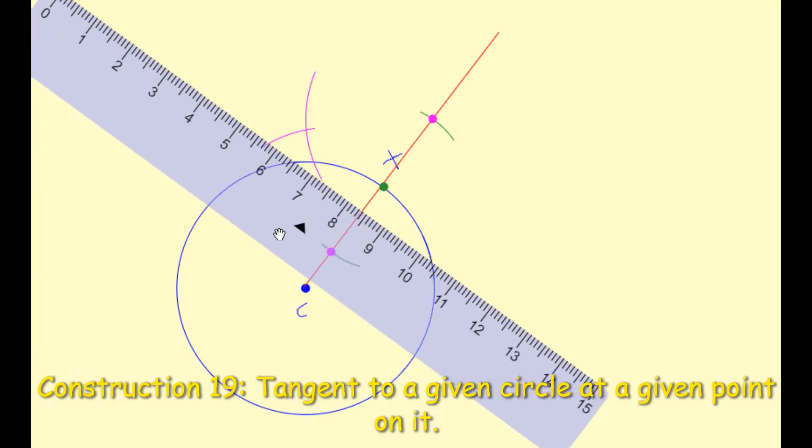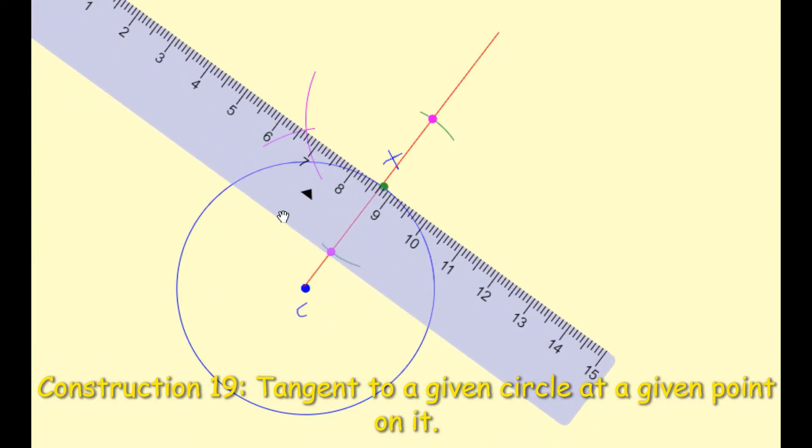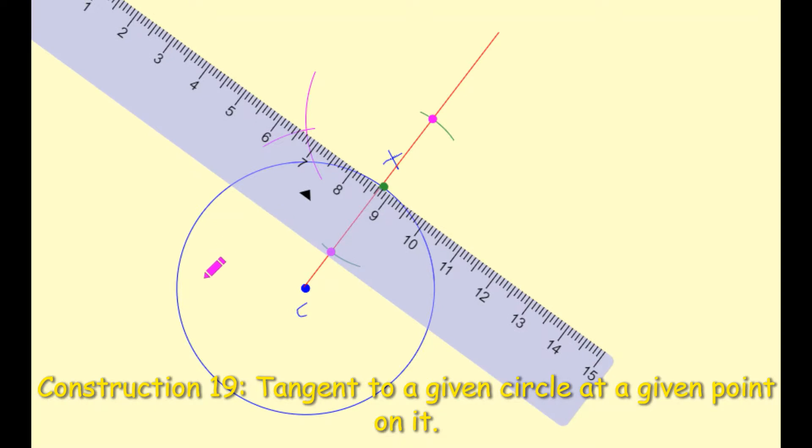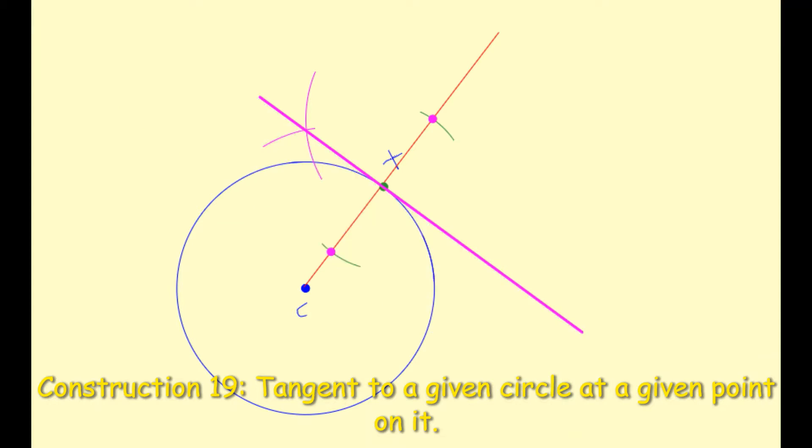That looks about right. And I'm going to use my pencil now, and I'm going to draw a line along the edge of my ruler. And that line now that I'm drawing is now the tangent to my circle. So if I remove my ruler, you should see that the tangent touches the circle exactly once. And there's our second way of drawing our tangent to a given circle.